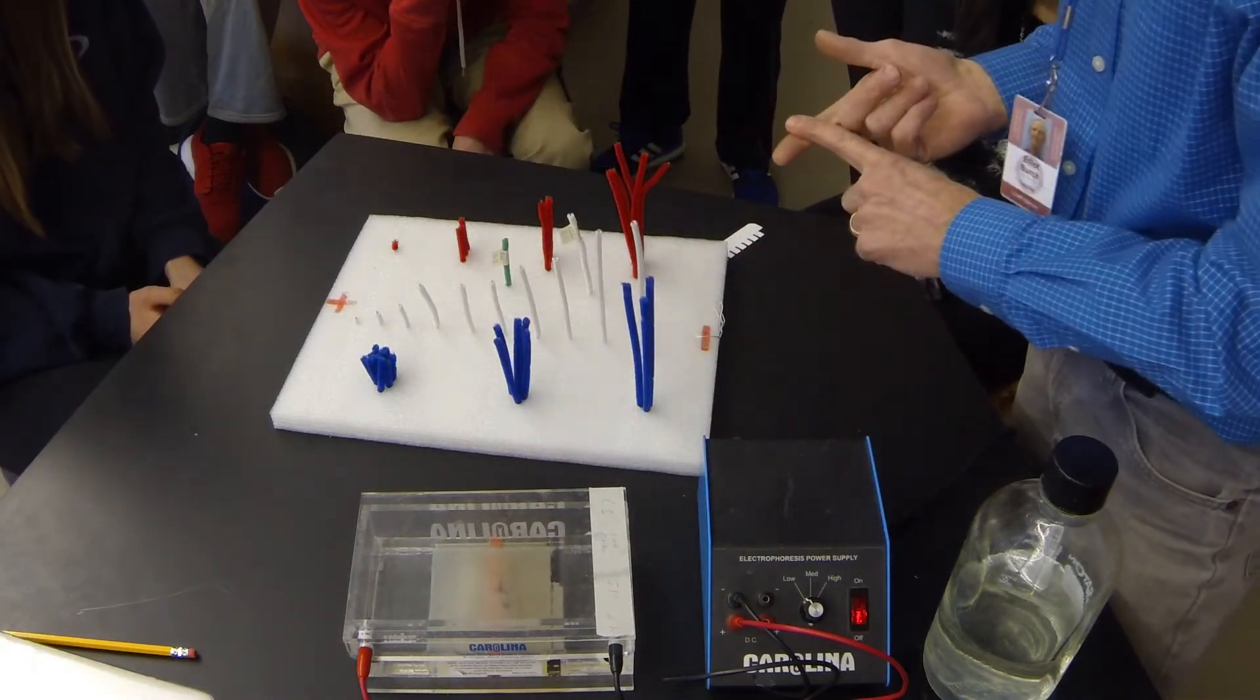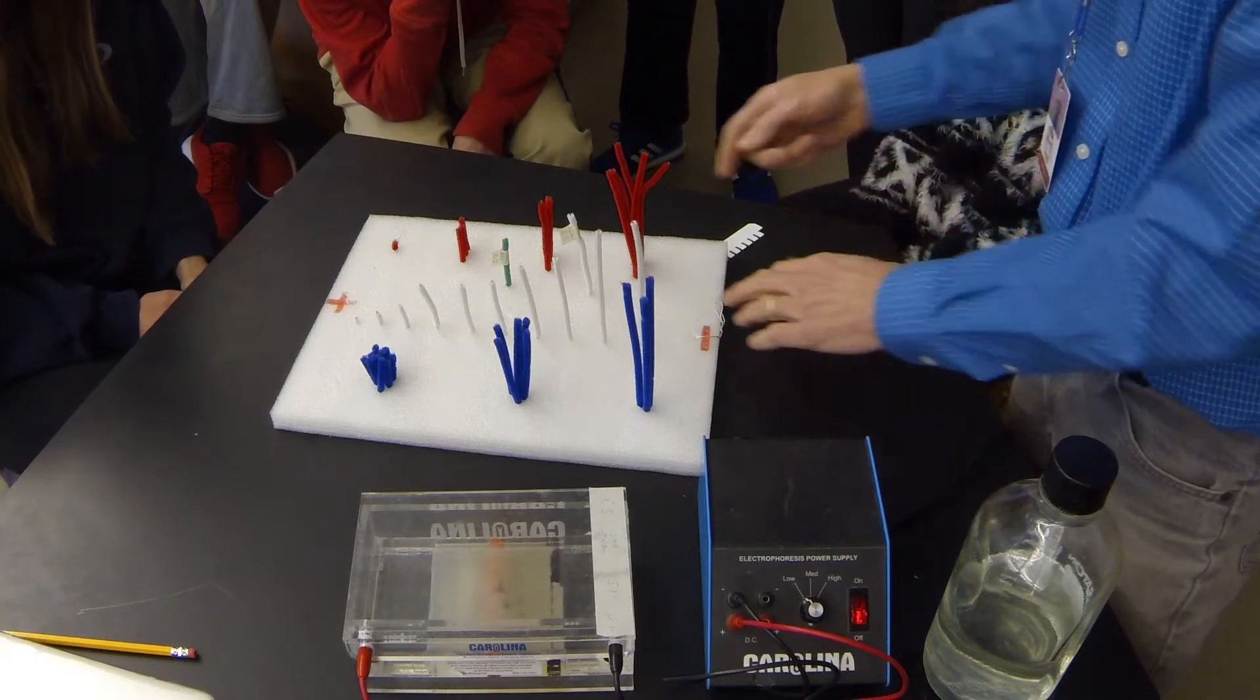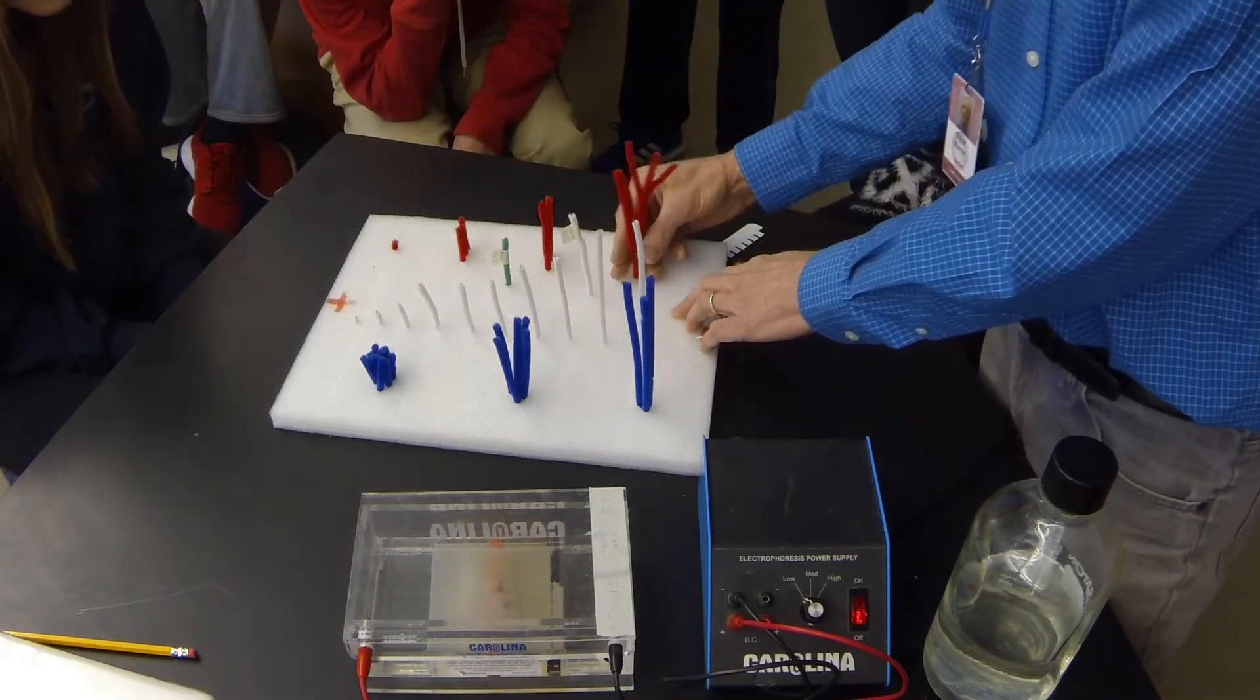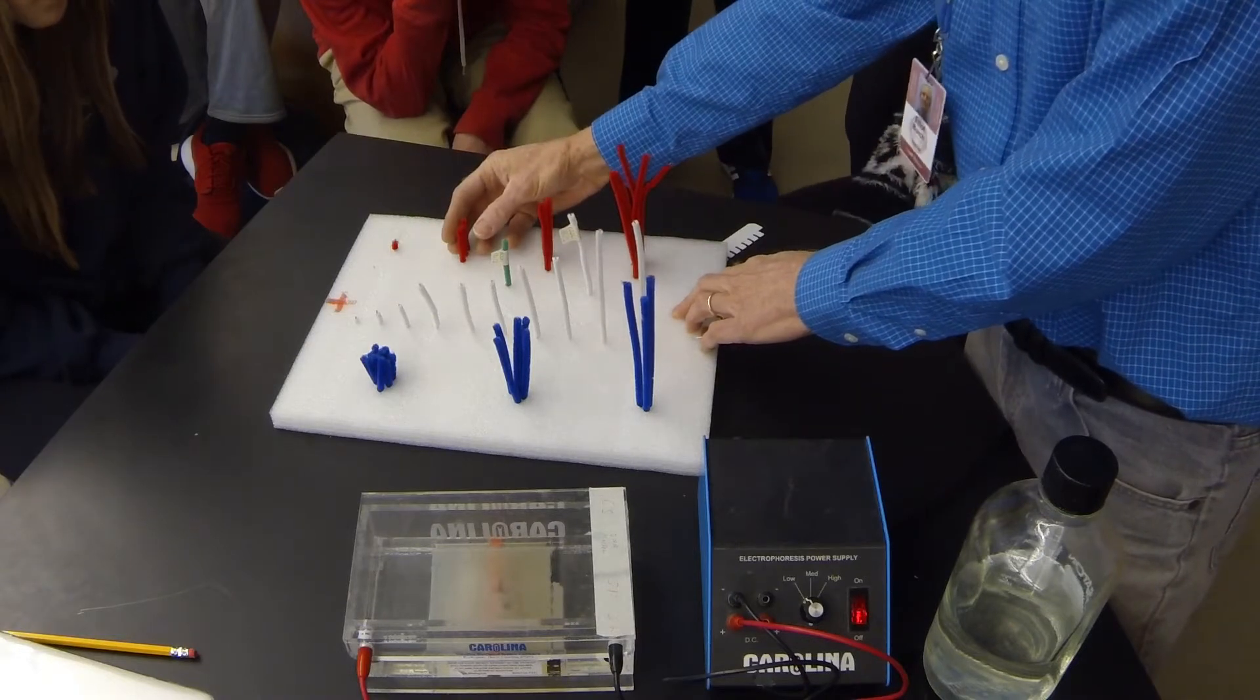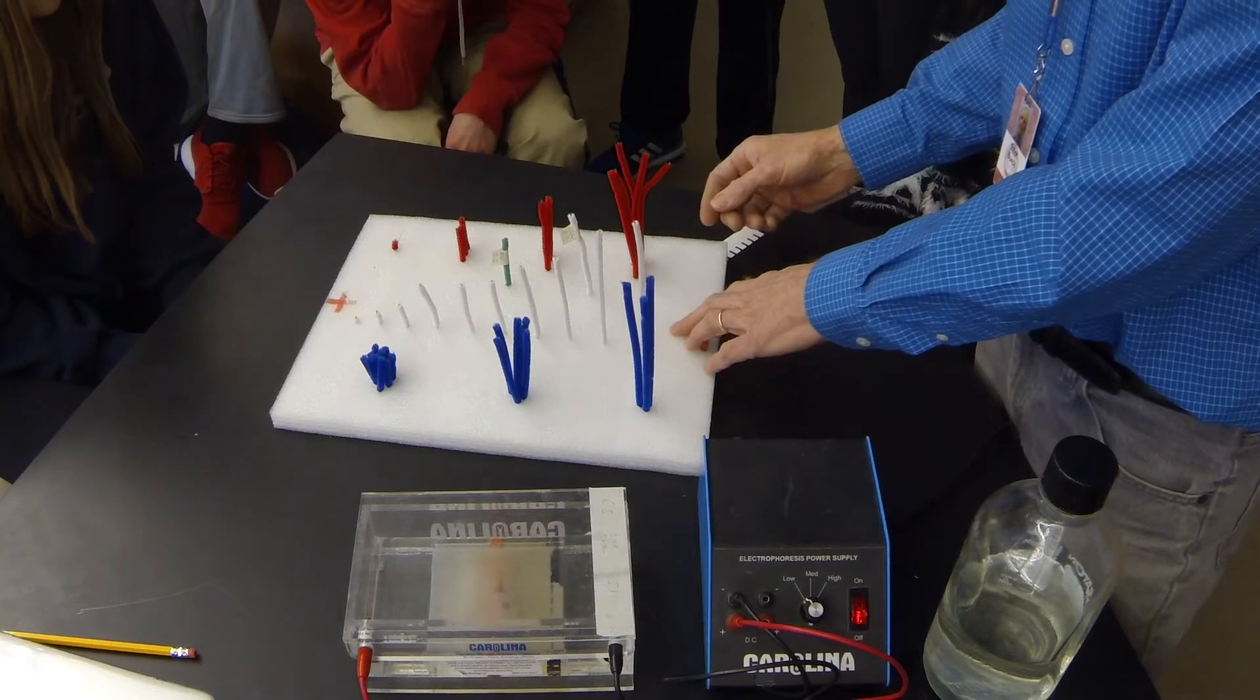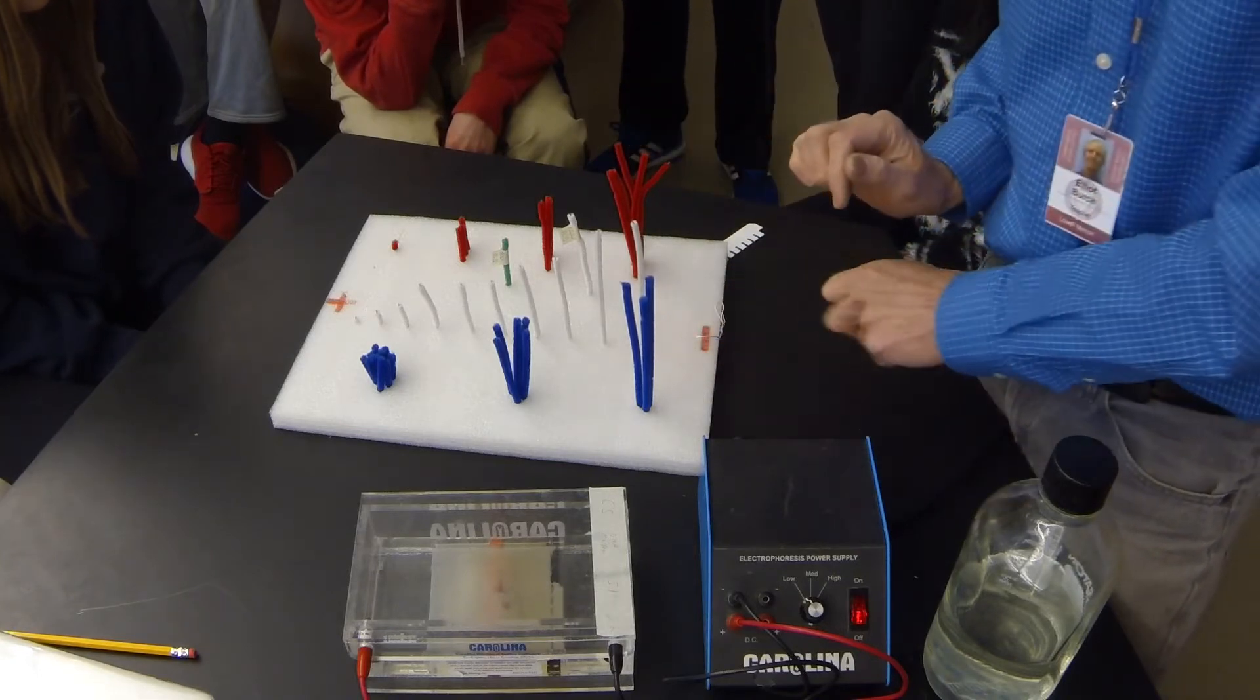To identify someone's DNA fingerprint, you're looking for the number of bands, the number of pipe cleaners in each band, because those are going to show up visually, and the size of the bands.